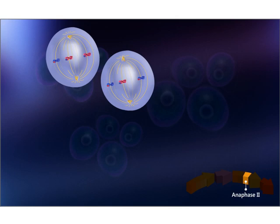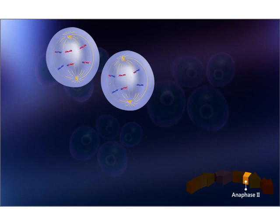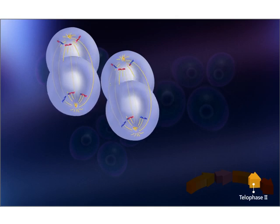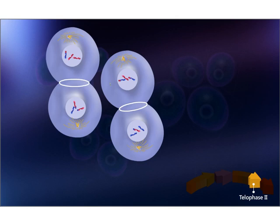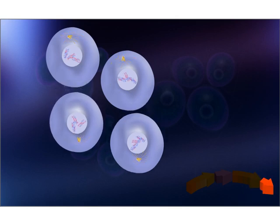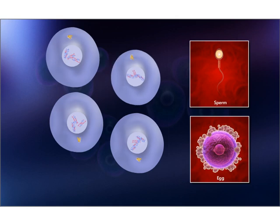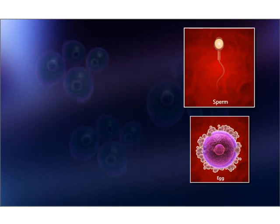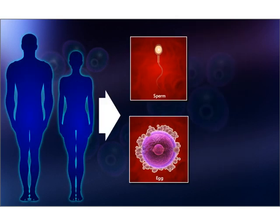During anaphase two, the centromere of the chromosome divides, and sister chromatids are separated and pulled towards opposite sides. The entire process ends with telophase two, as chromosomes again change to chromatin network. The nucleolus and nuclear membrane reappear, and furrows separate the two daughter cells into four haploid daughter cells. The haploid daughter cells will specialize into gametes, either sperm or egg.